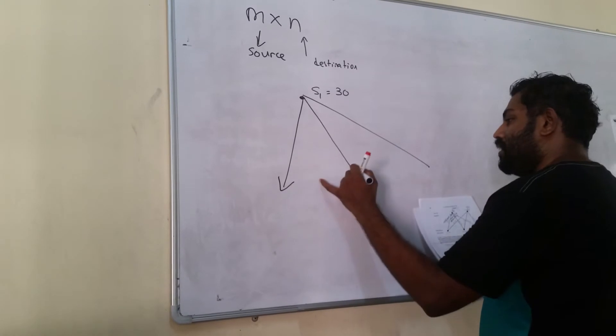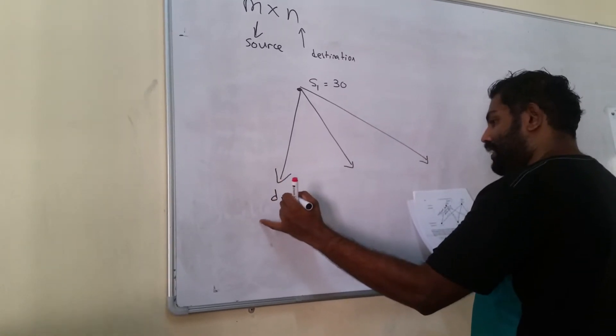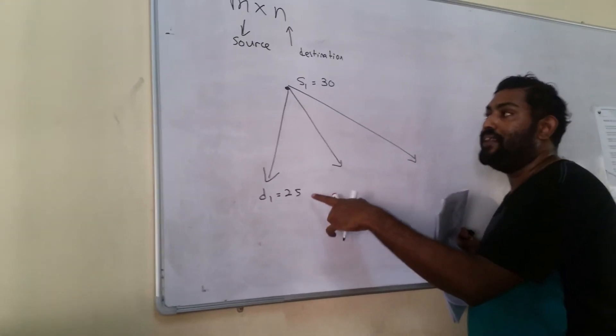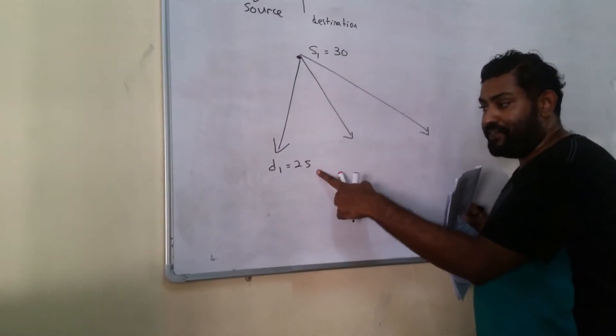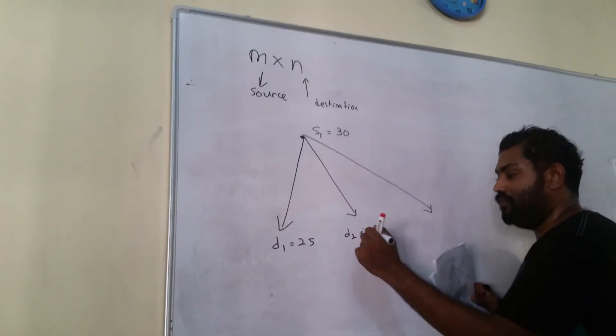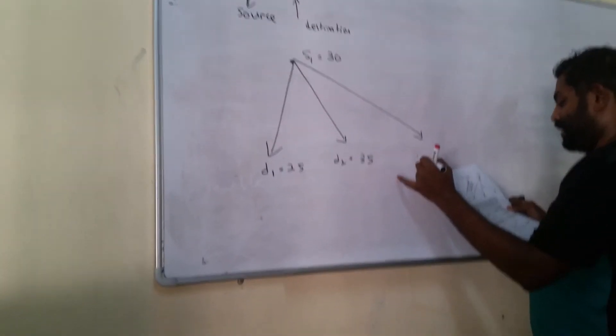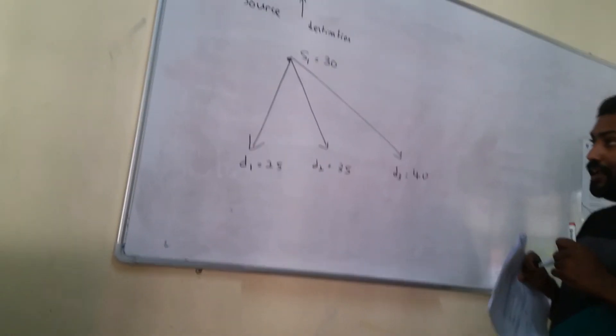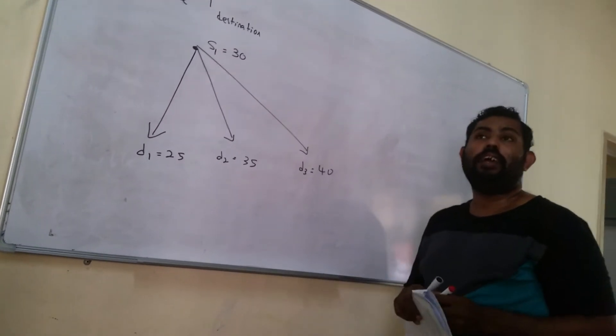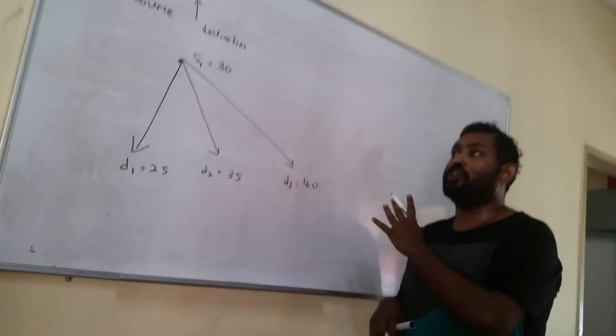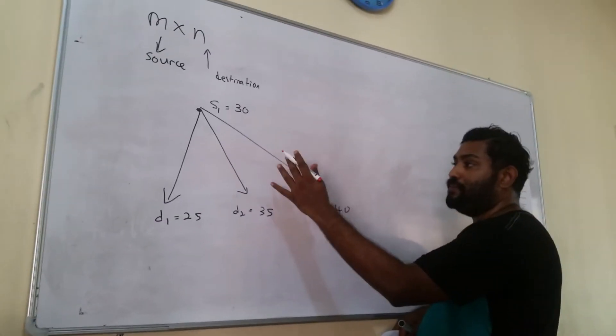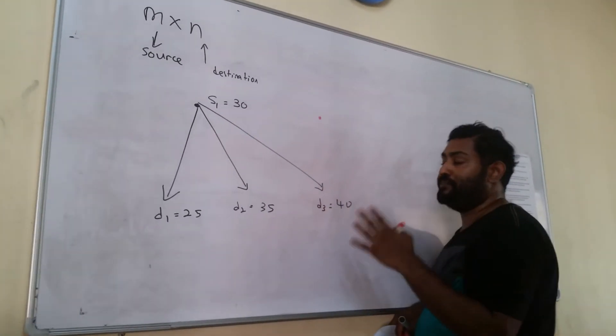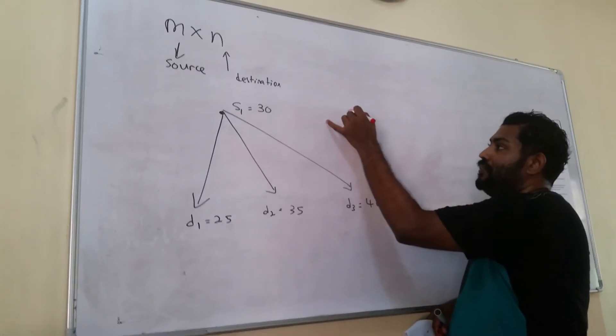Which we call as D1, where D1, destination one, needs only 25 items. D2 needs 35 items, and D3 needs 40 items. Remember when we have a supplier shop, we are not going to get all the things from one shop. We also get the same items from other shops who offer a reasonable price.